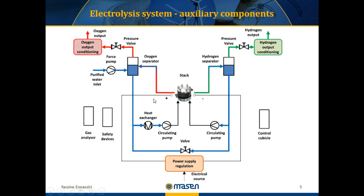Here we can see the principal auxiliary components in an electrolysis system. The stack electrolysis has two inputs: water as a reagent and electricity to drive the reaction of water splitting. Water is pumped to the stack after preheating to the operating temperature, which is in the range of 70 to 100 degrees for low temperature electrolyzers. The two gases produced are evacuated with a certain quantity of water bubbles, so hydrogen and oxygen enter a separation unit for purification before the conditioning process and then storage. It is also important to have control devices for regulation as well as for safety issues.